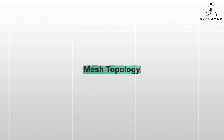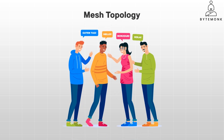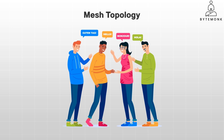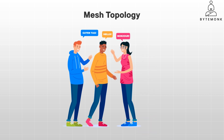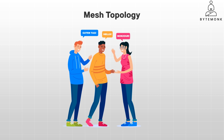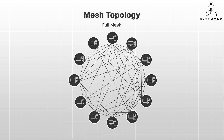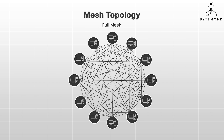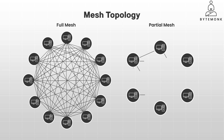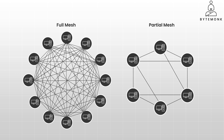Mesh topology is like a web of interconnected nodes where data can flow along multiple paths to reach its destination. Imagine a group of friends where everyone is talking to everyone else simultaneously — if one person leaves the conversation, the others can still chat without interruption. There are two main types of mesh topologies. In full mesh, every device has a direct connection to every other device, offering the highest level of redundancy but can be complex and expensive to implement. In a partial mesh, some devices are fully connected while others are only connected to a few key nodes, striking a balance between redundancy and cost-effectiveness.